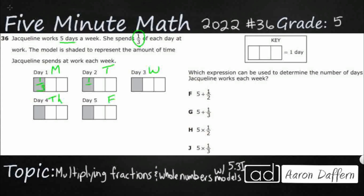That seems pretty simple — that's one-third. Each of these are going to be one-third. And in case we missed it, here's our key. Each of these little rectangles represents one day, and as you can see, each of them are going to be shaded in one out of three pieces. That's basic fractions, stuff we've learned back in third grade.